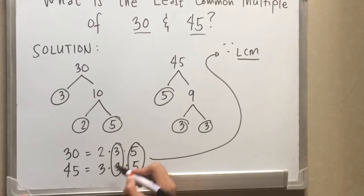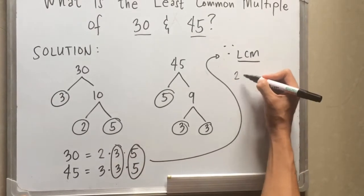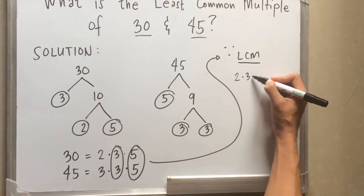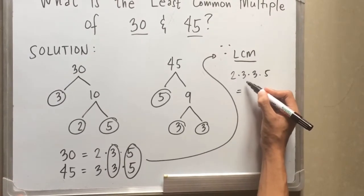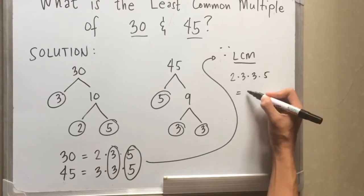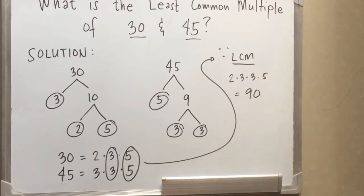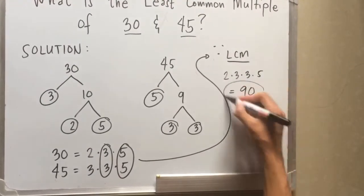So our factors are 2, 3, 3 and 5. 2 times 3 times 3 times 5 is equal to 2 times 3, 6 times 3, 18 times 5 is equal to 90. So 90 is our least common multiple for 30 and 45.